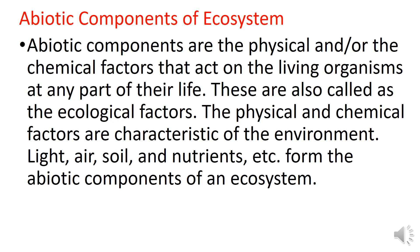Light, air, soil, and nutrients form the abiotic components of an ecosystem. The abiotic factors vary from ecosystem to ecosystem. In an aquatic ecosystem, the abiotic factors may include water pH, sunlight, turbidity, water depth, salinity, available nutrients, and dissolved oxygen. Similarly, abiotic factors in a terrestrial ecosystem can include soil types, temperature, rain, altitude, wind, nutrients, sunlight, and many more.